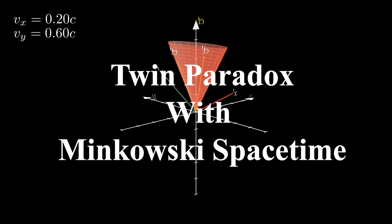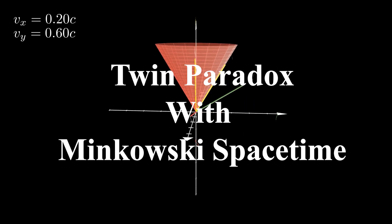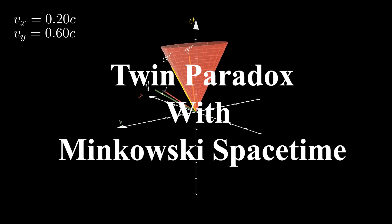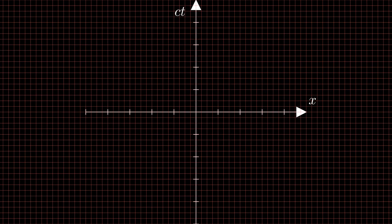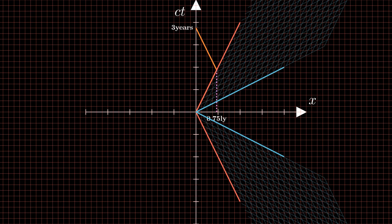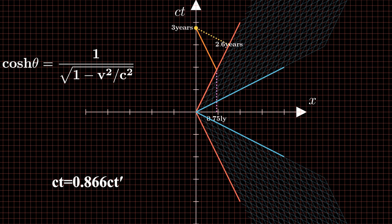Let's move on to another example: the famous thought experiment from special relativity, the twin paradox. One twin stays on earth while the other travels away at 0.5c and then returns. From the perspective of the twin on earth, we draw the world line of the traveling twin. When the traveling twin returns, a time t has passed. Since the traveling twin's spacetime is tilted, the intersection points of the bent spacetime axes are found using hyperbolic trigonometric functions. The result is ct equals 0.866 ct-prime, meaning that if the twin on earth has lived for three years, the traveling twin has only lived for 2.6 years — they are no longer the same age. Thus, the paradox is resolved through Minkowski spacetime.